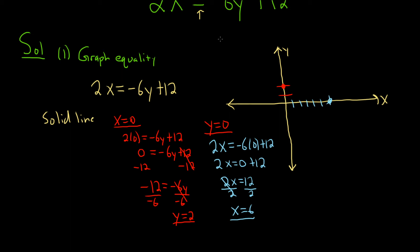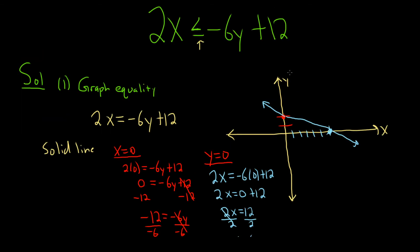And it's a solid line because we have the equal to part in the inequality. So if it was supposed to be a straight line, if it was this, it'd be dotted. But because it's this, it's solid. All right, there's a couple different ways to determine where to shade.